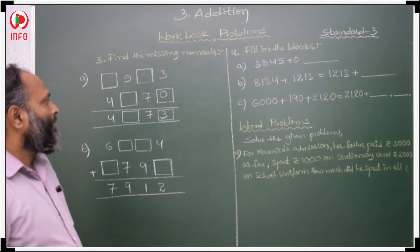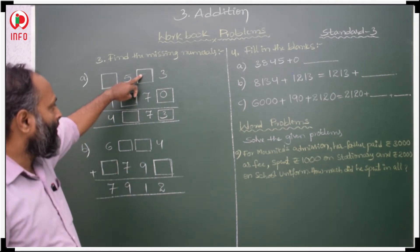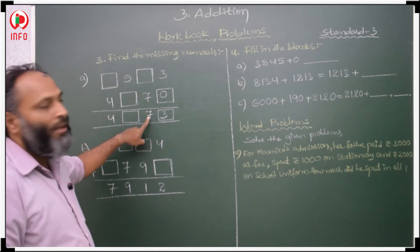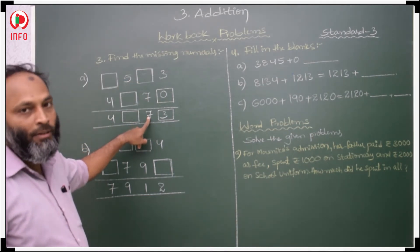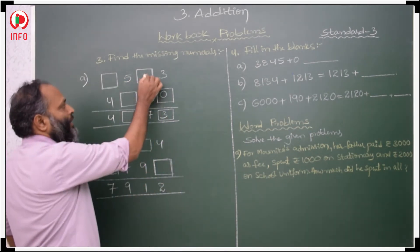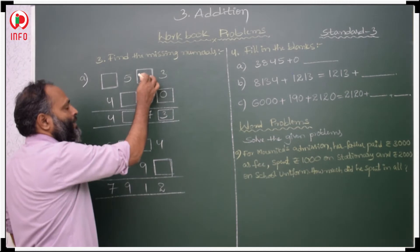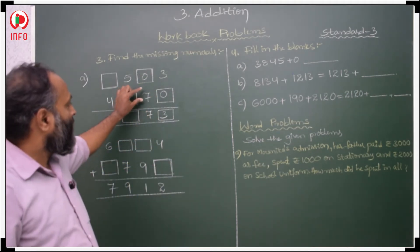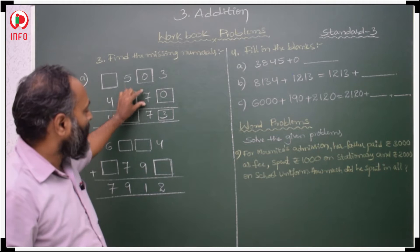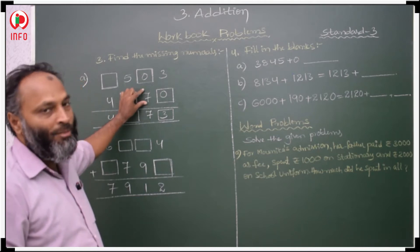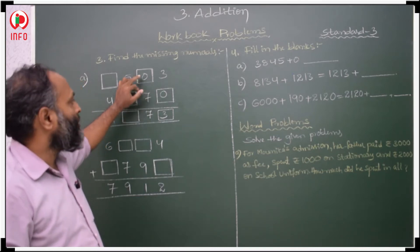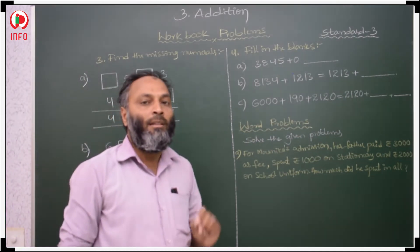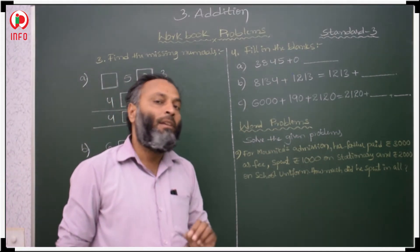So then what will we get here? What should we get here to make the sum 7? If I take 0 here, 0 plus 7 is equal to 7. So if sum and addend are the same, then the other addend will be 0.